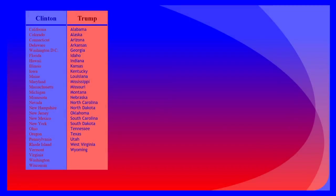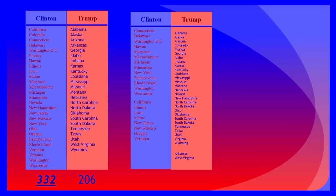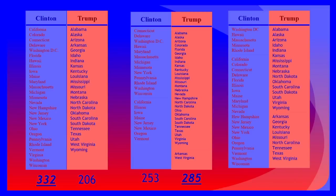The full model predicts that 27 states will vote for Hillary Clinton and 24 will vote for Donald Trump, yielding a sweeping victory for Clinton at 332 against 206. The standard deviation cutoff swing state model predicts a Trump victory at 285 against 253. The 80% consistency cutoff swing state model yields another Clinton victory at 319 against 219.